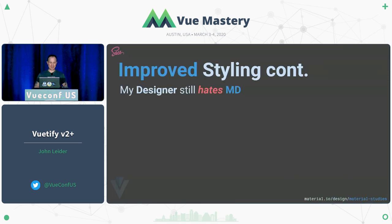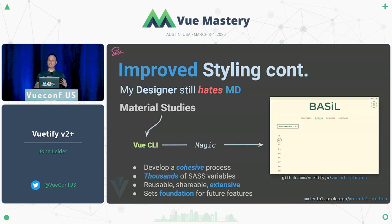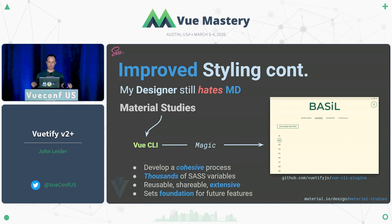I always hear 'my designer still hates Material Design — how do I get them to use it?' We've had the tools to do this in Vuetify, but we didn't have a good process for explaining it. In version 2, Google released what's called Material Studies — they use the baseline of Material Design and add different styling to show how you can customize an app with Material Design but have it look completely different.